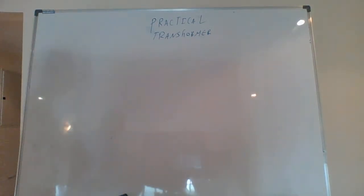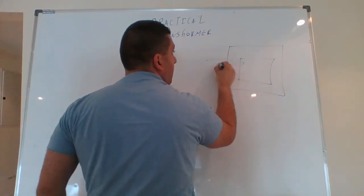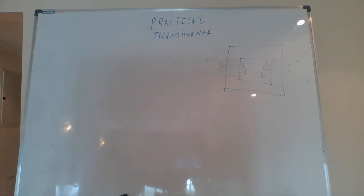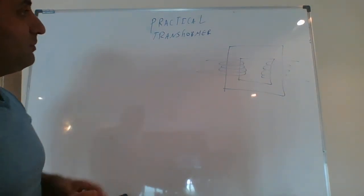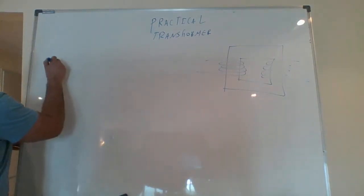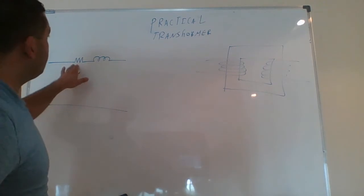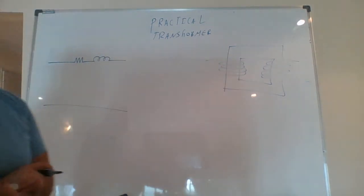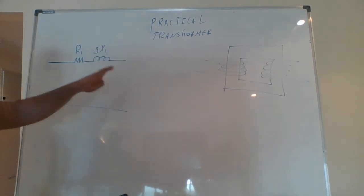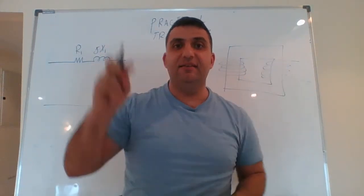My transformer has a primary winding and a secondary winding. Because it's a practical transformer, I represent the resistance and inductance of the primary winding as R1 and jX1. This is due to the wires — every wire can be represented by a resistor and an inductive element.